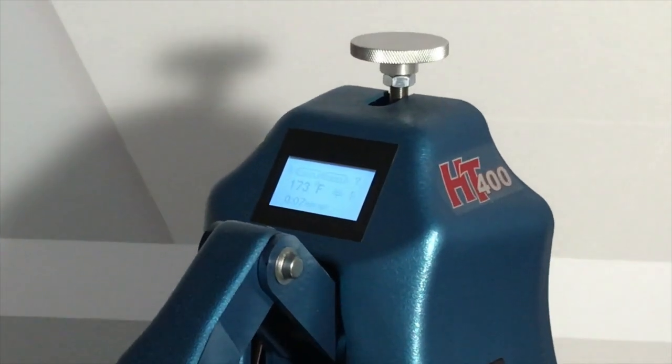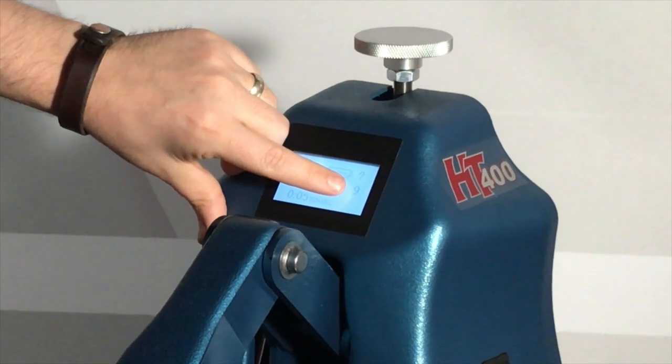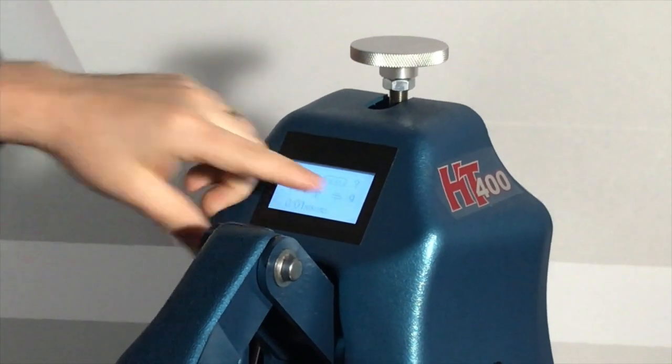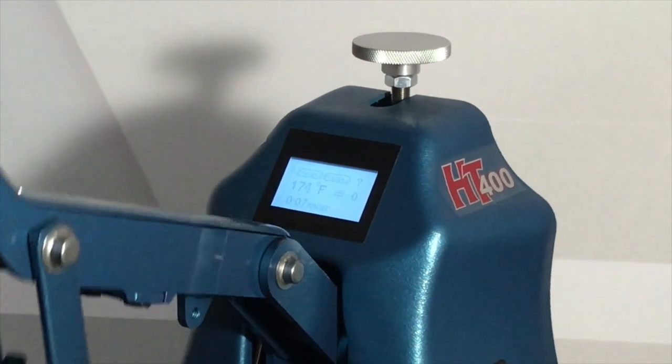So when I close down this press, I can see that I have a 9 setting, which is the top end, the max end of the scale, on a 0-9 readout for the pressure on this press.